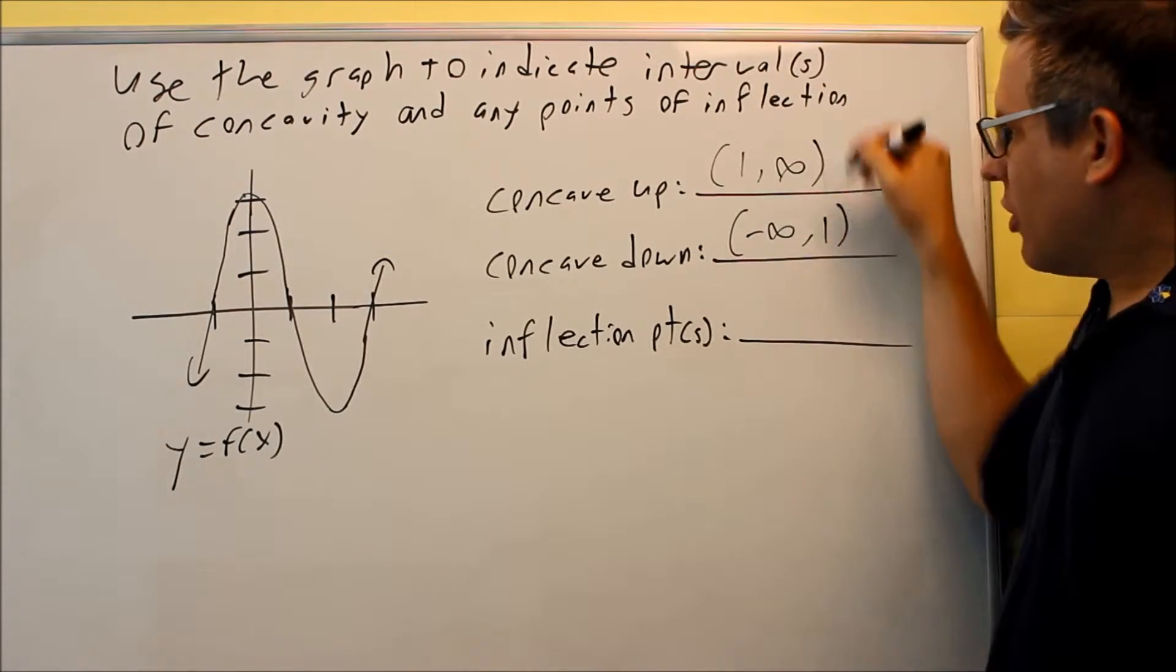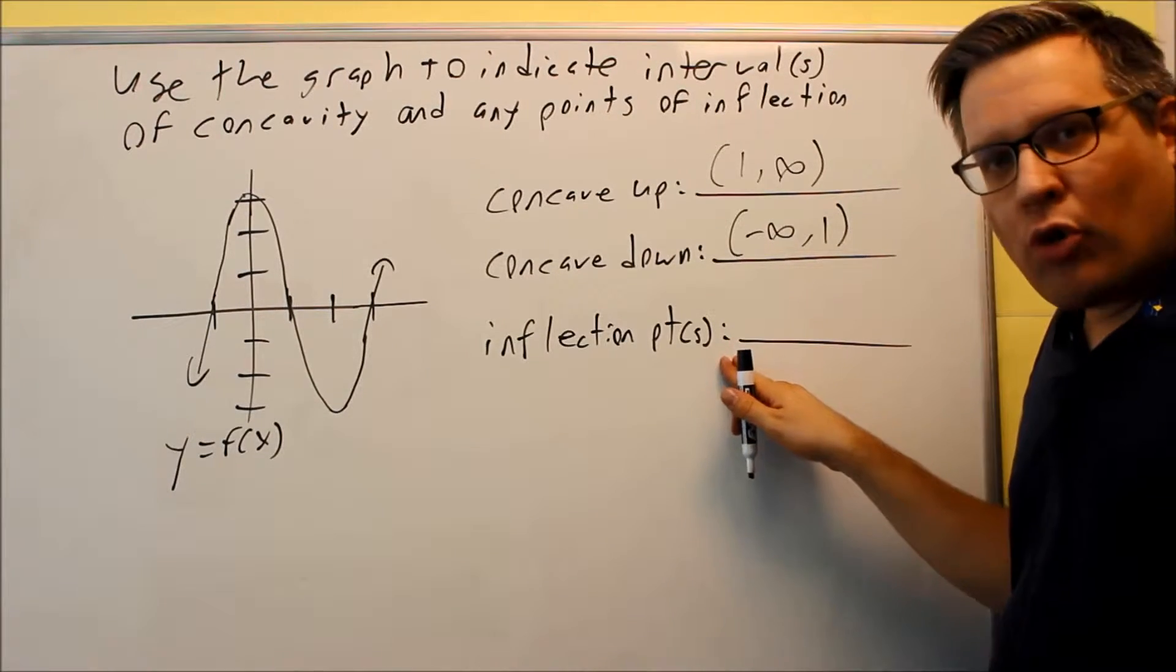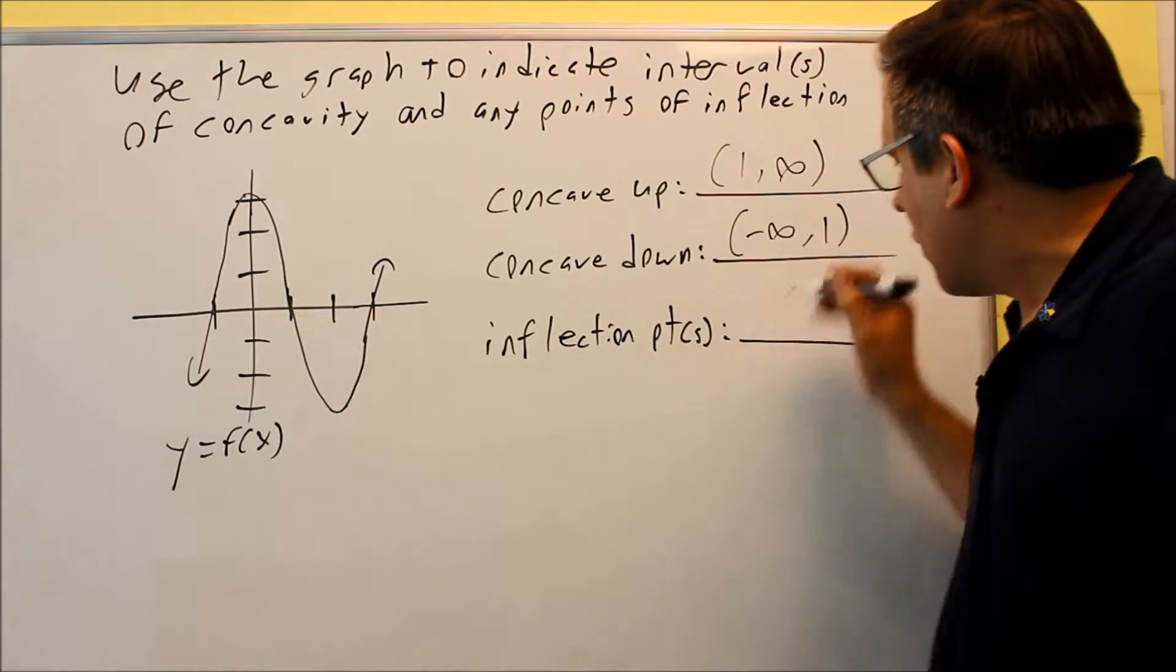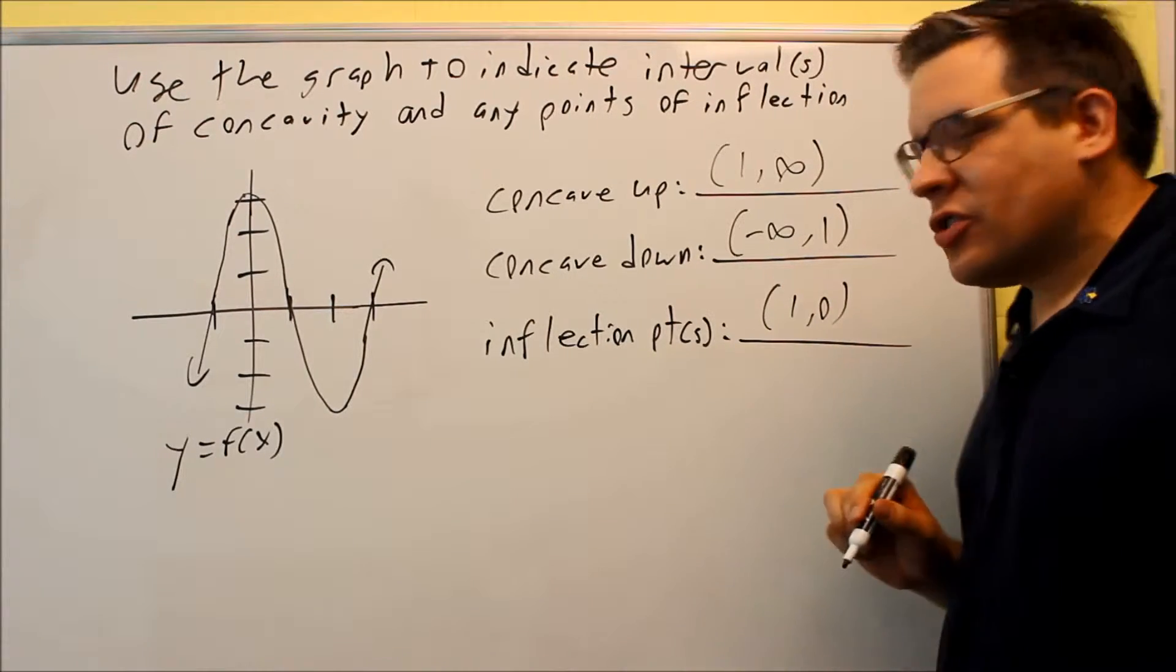So these are given as intervals, but the inflection point has to be given as a coordinate x comma y. We're going to read that off the graph and that coordinate is 1 comma 0.